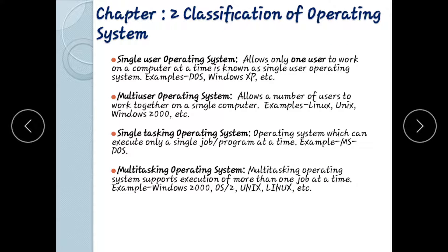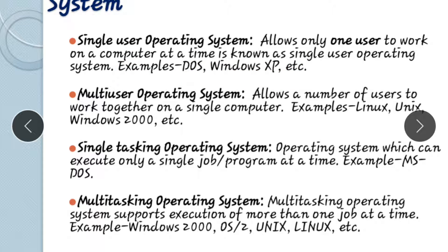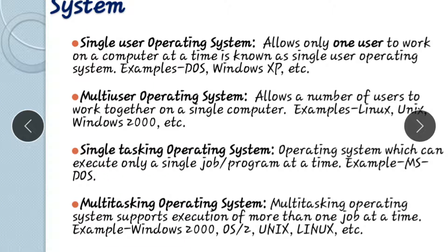Classification of operating system: The operating system is classified as single user operating system — one user at a time, for example Windows XP — and multi-user operating system, which supports multiple users simultaneously. Examples of multi-user OS include Linux, Unix, and Windows 2000.